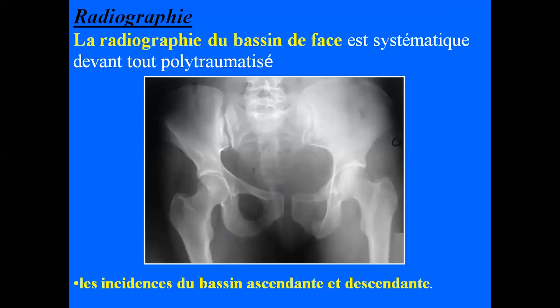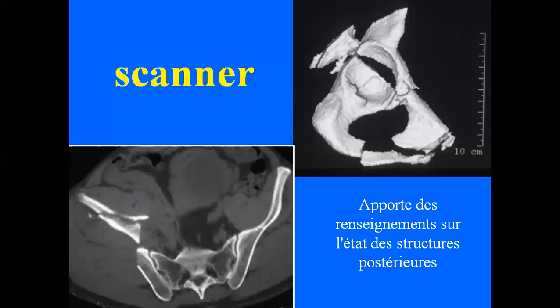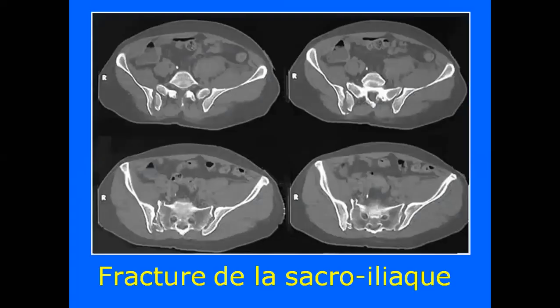Le bilan radiologique : on demandera systématiquement chez tout polytraumatisé une radiographie du bassin de face. On peut ajouter des incidences ascendantes ou descendantes pour mieux étudier les articulations sacro-iliaques, et des incidences particulières — les trois quarts à l'aile et trois quarts obturateur — pour éliminer une fracture du cotyle. Le scanner apporte beaucoup d'informations, surtout sur le sacrum, les sacro-iliaques et les ailes iliaques en arrière.